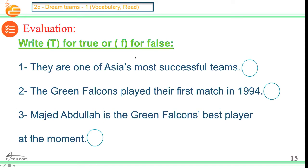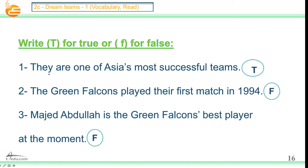Now, write T for true or F for false. Number one: They are one of Asia's most successful teams — is it true or false? Number two: The Green Falcons played their first match in 1994 — true or false? Number three: Majed Abdullah is the Green Falcons' best player at the moment — is it true or false? The answers: number one is true. Number two is false. Number three is false.